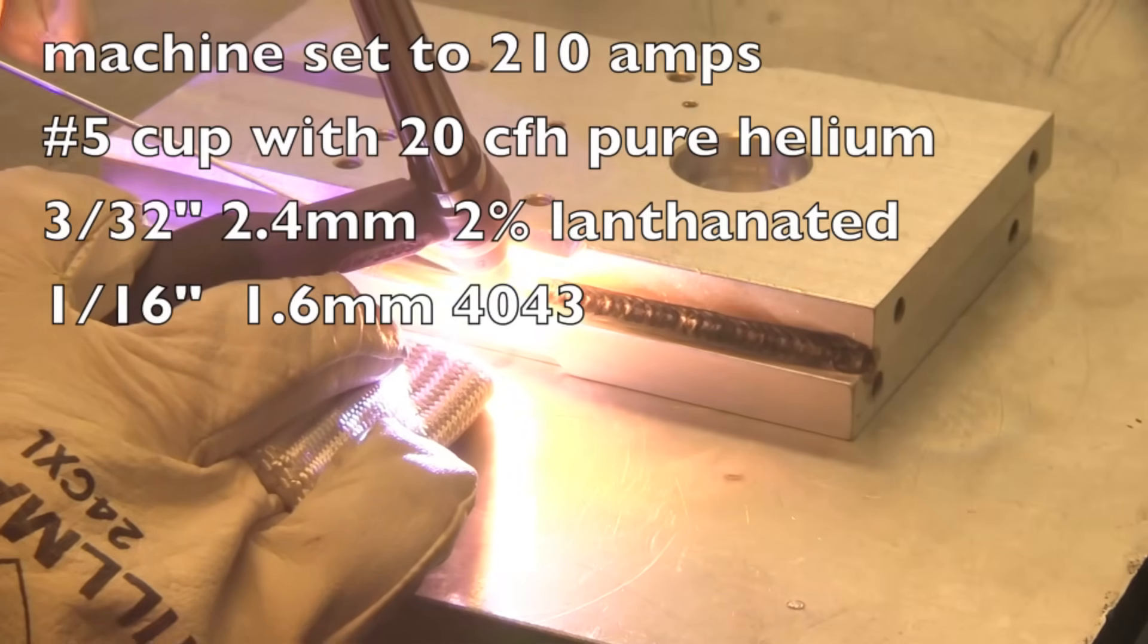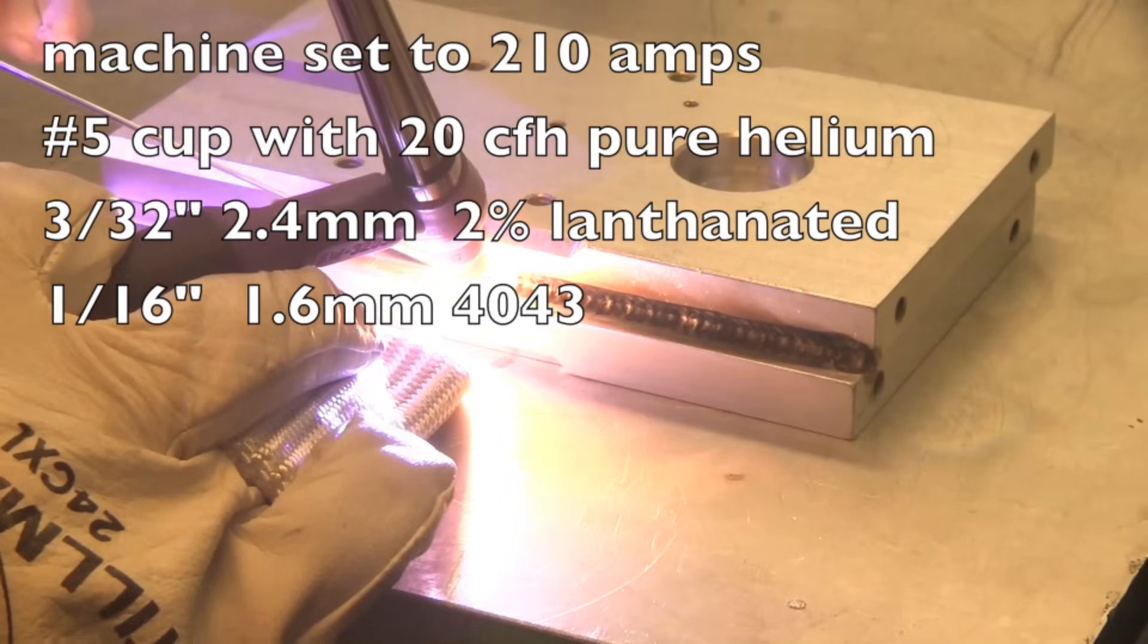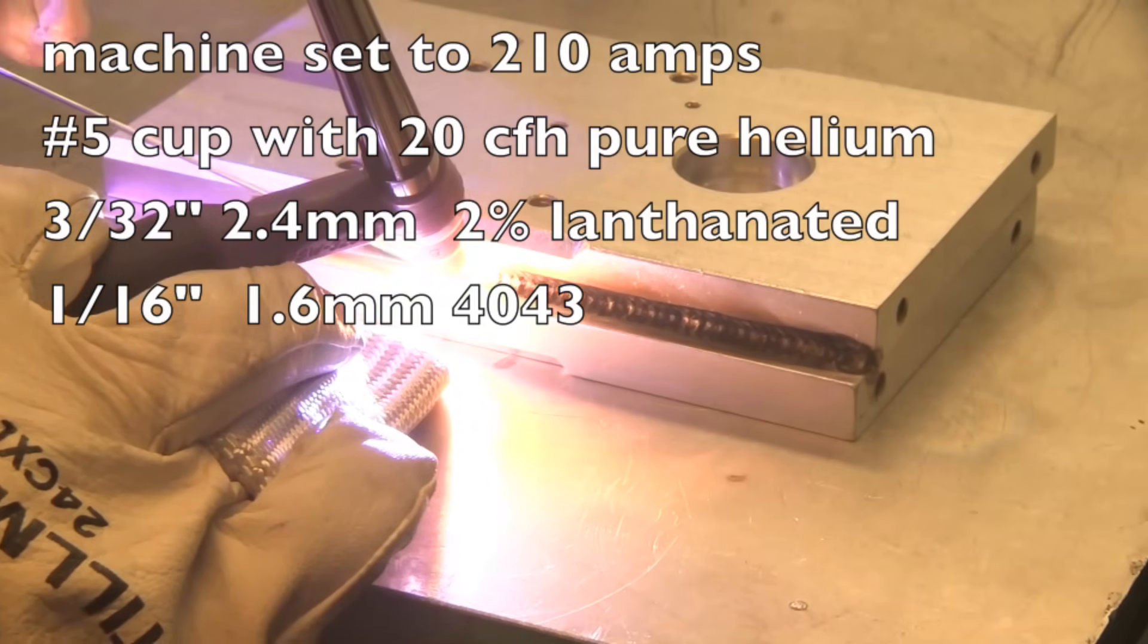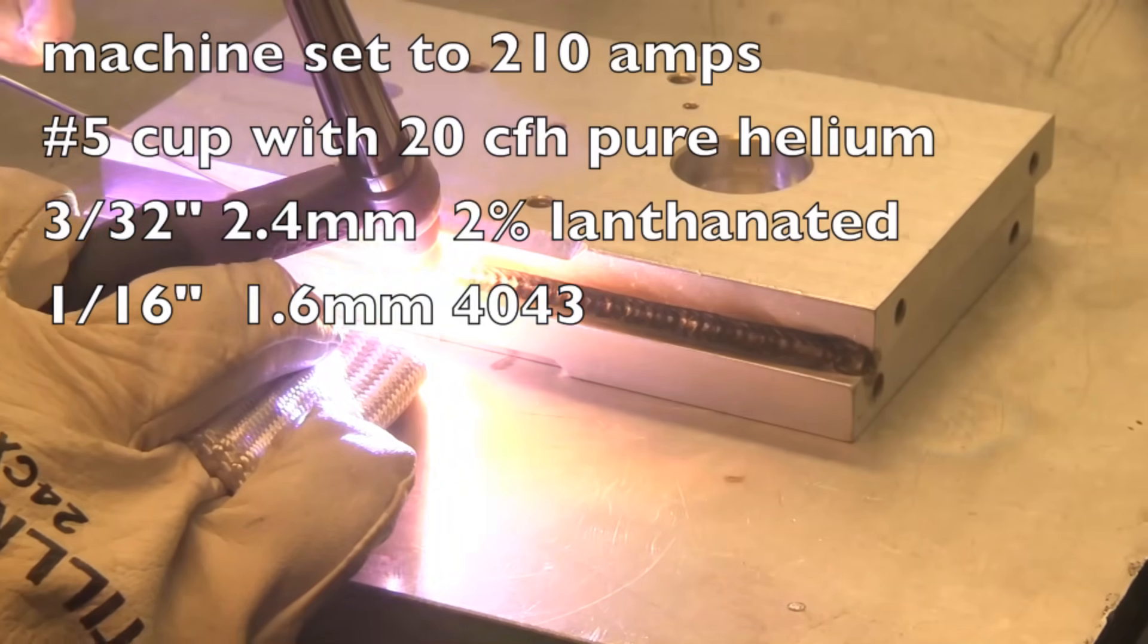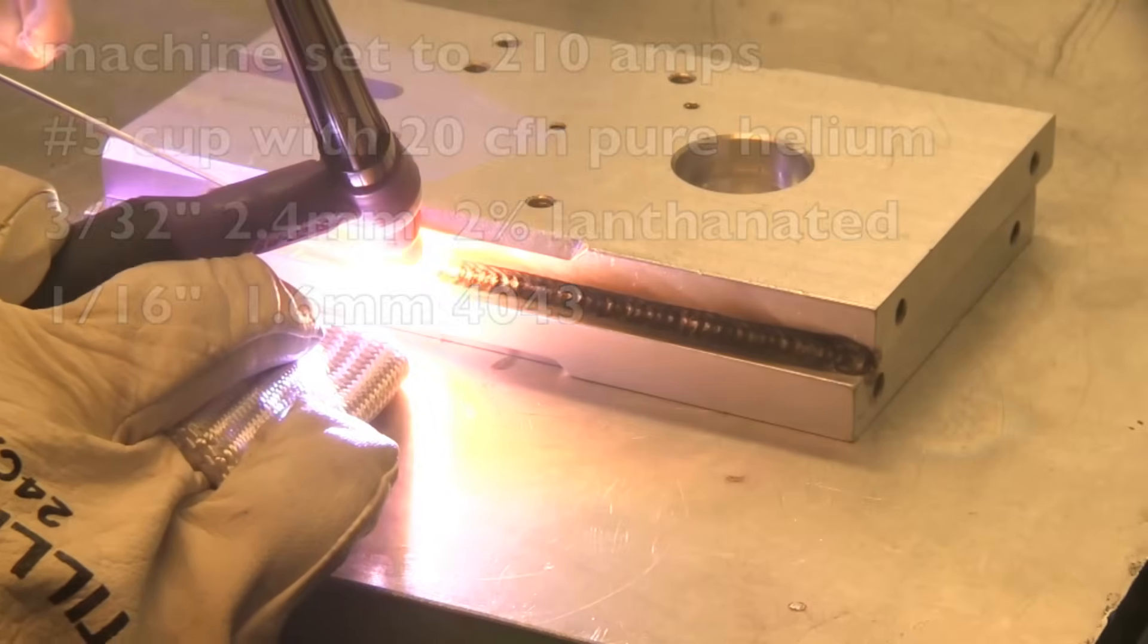All right, a tight arc and the torch angle at as close to 90 degrees as you can get it, and then also you're kind of stabbing the wire in the puddle. You're not sneaking up on it. Those are the three main things.